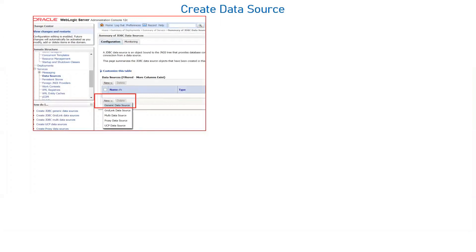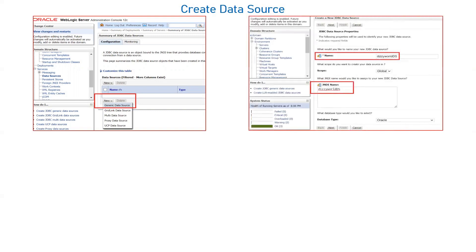To create a generic data source, go to your admin console, then go to Services, click on the data source tab, then click on New > Generic Data Source. If you are not aware of how to create a data source, I have posted another video on this as well. The important thing is that the name can be whatever you want, but the JNDI name should be the same as what you are going to define in your code. JNDI is a lookup service — your application uses the JNDI name to look up resources from the WebLogic system.